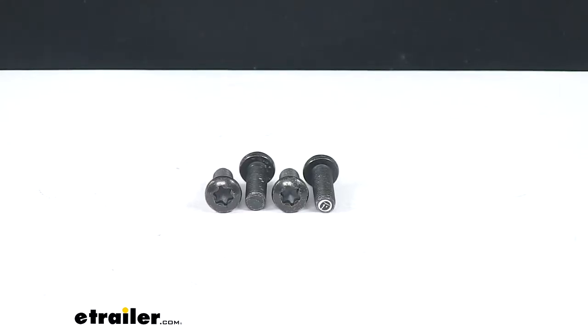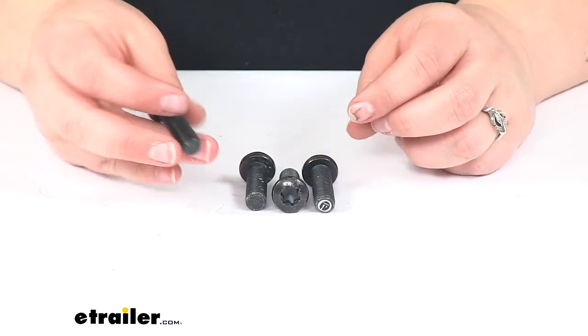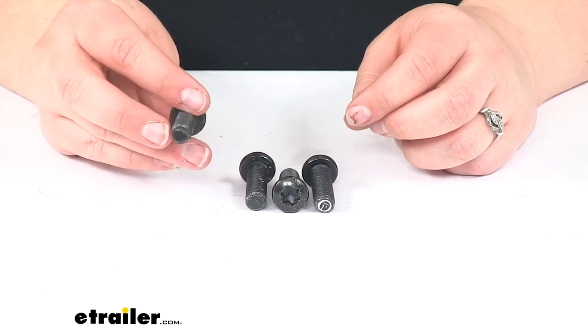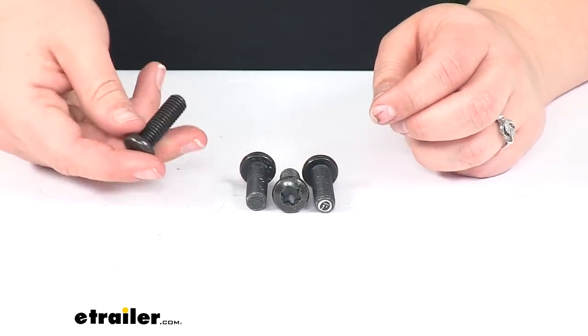Today we'll be taking a look at the 3 1/8 inch Torx bolt for the Bulldog Winch Jeep JL Winch Mount. This is a kit to mount up your Fairlead on your Jeep JL OE Steel bumpers.